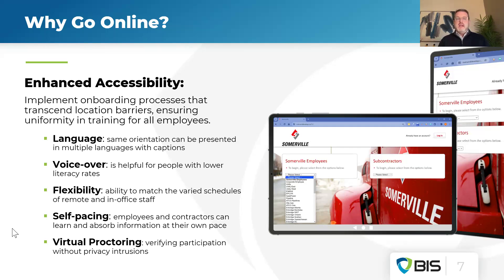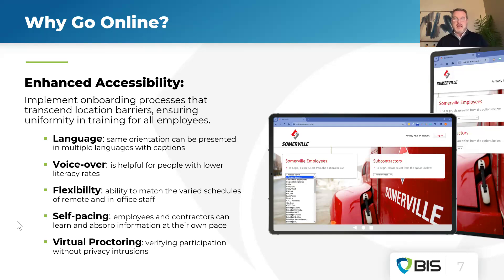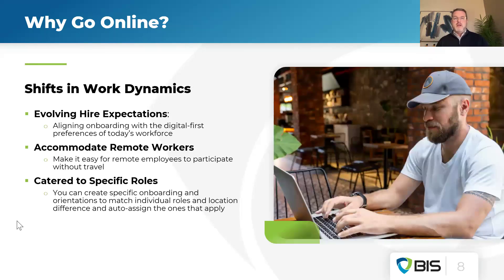Advanced features like virtual proctoring can provide participation verification and confirm the identity of the employee completing the courses. Many times employees attempt to bypass an online orientation by having a spouse, partner, or child sit in front of the computer and click Next as they progress through — and at the end it still shows a completion, but that individual absorbed none of the information. Solutions like virtual proctoring can validate that the employee is in fact who they say they are and confirm they are in front of the computer for the entire session.